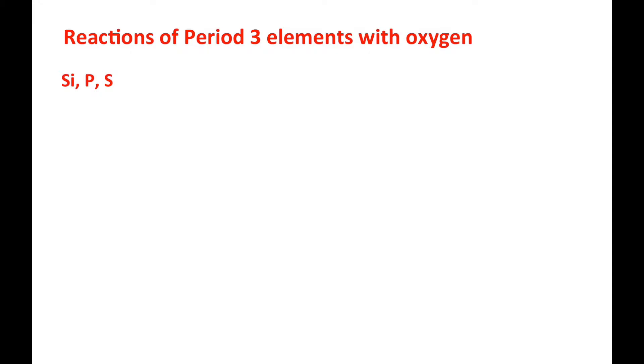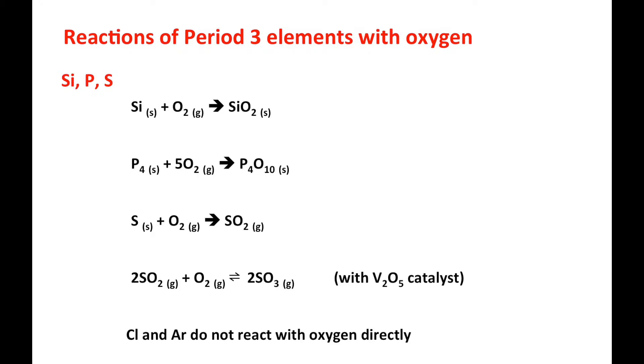How about the non-metal part? Silicon, phosphorus, and sulfur. Here it shows the equation. All of them become oxide. Silicon becomes silicon dioxide, phosphorus becomes P4O10, sulfur becomes SO2.